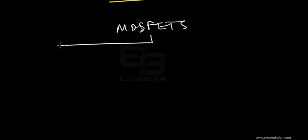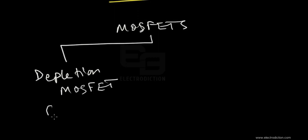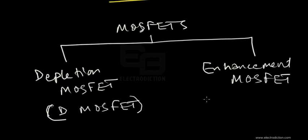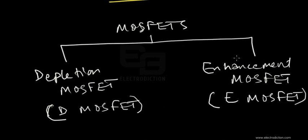MOSFETs can be broadly classified into two types. One type is known as the depletion-type MOSFET, called the D-MOSFET for short. On the other hand, we have the enhancement-type MOSFET, also referred to as the E-MOSFET.